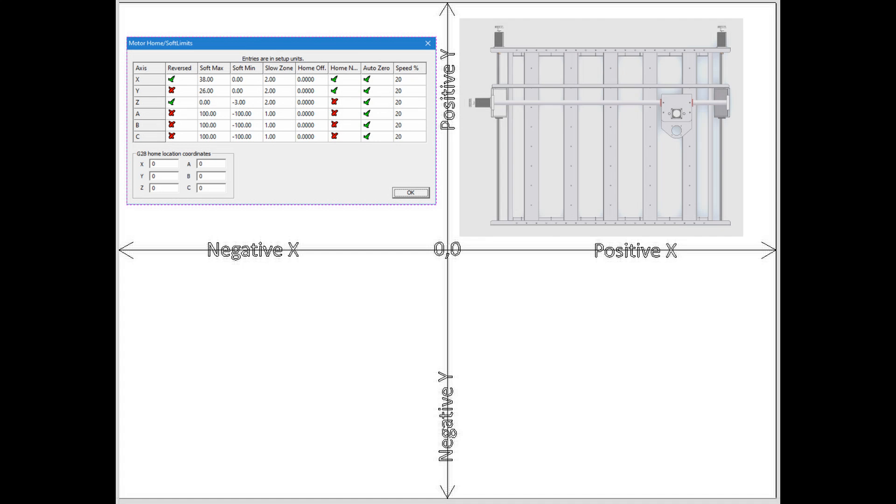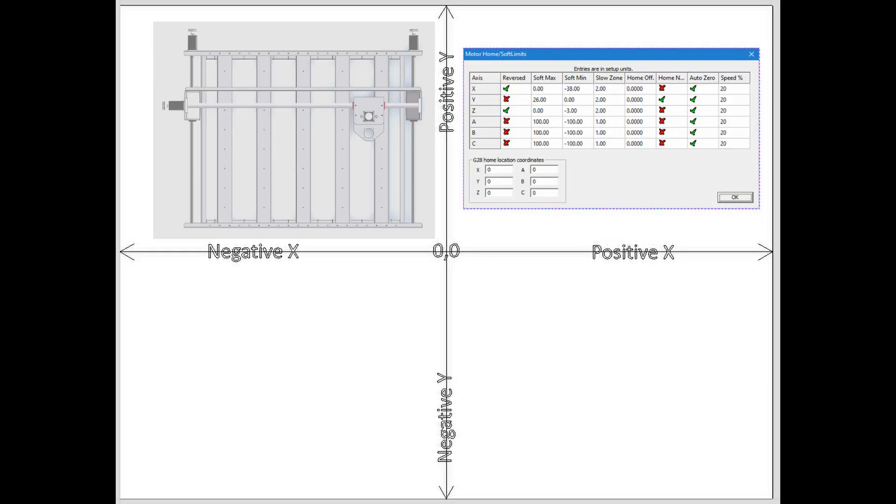Okay, while we're here I might as well show you the other two examples of homing locations. In this example the machine will home to the lower or front right corner of the machine. Notice that the x-axis has an x mark in the home negative column because it will need to move in the positive direction to find home. But the y-axis has a check mark because it will need to move in the negative direction to find home. You can see the different values in the x and y soft max and soft min to use the correct soft limits.